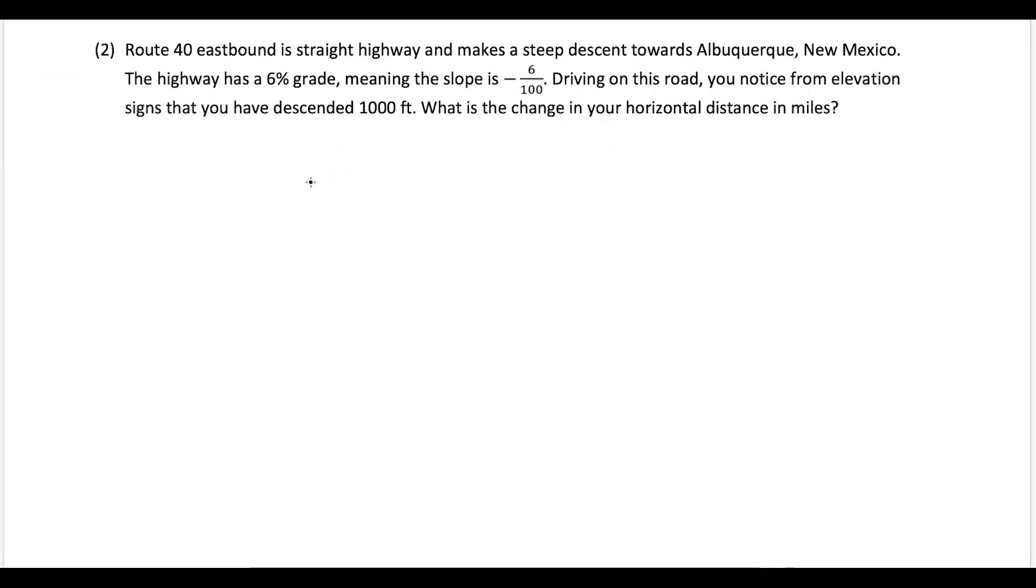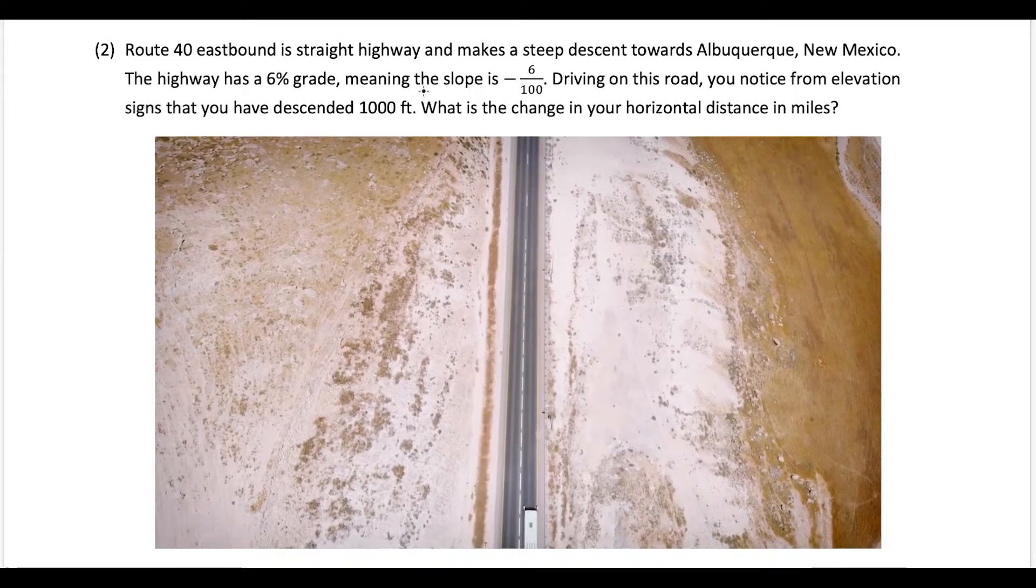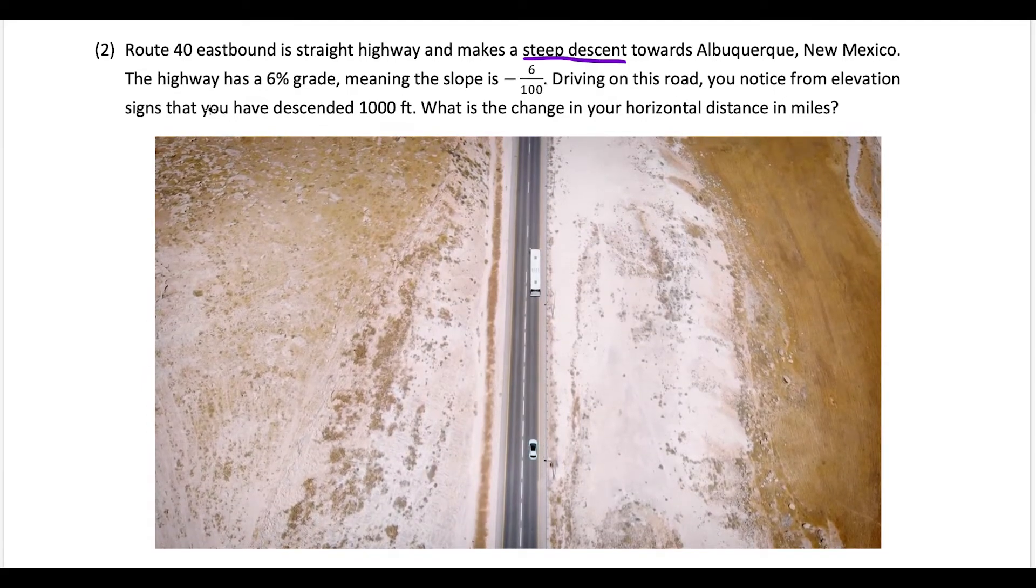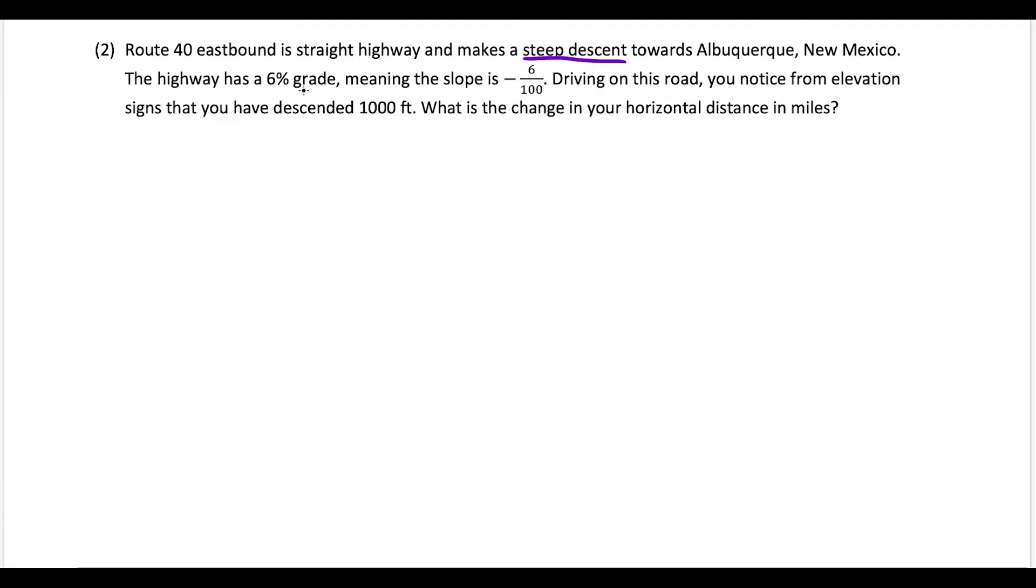The second question is a driving question. We're on Route 40, a straight highway that makes a steep descent towards Albuquerque, New Mexico. The highway has a 6% grade, meaning the slope of the road is -6/100. We're driving on this road and we notice elevation signs telling us we have descended 1000 feet.